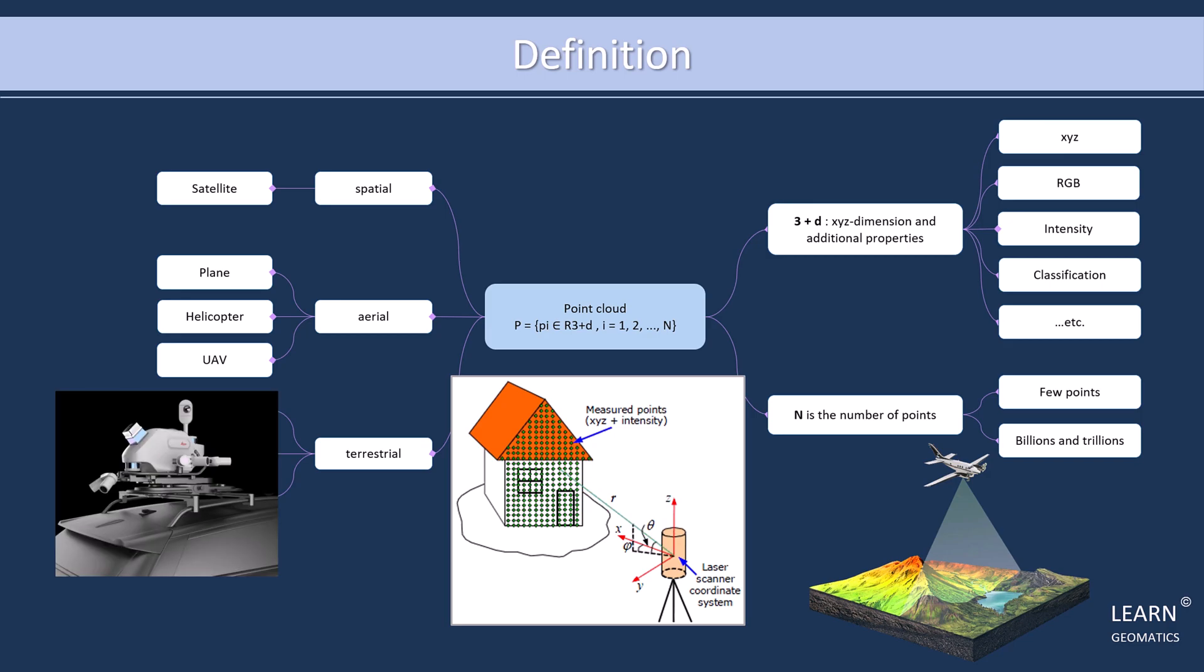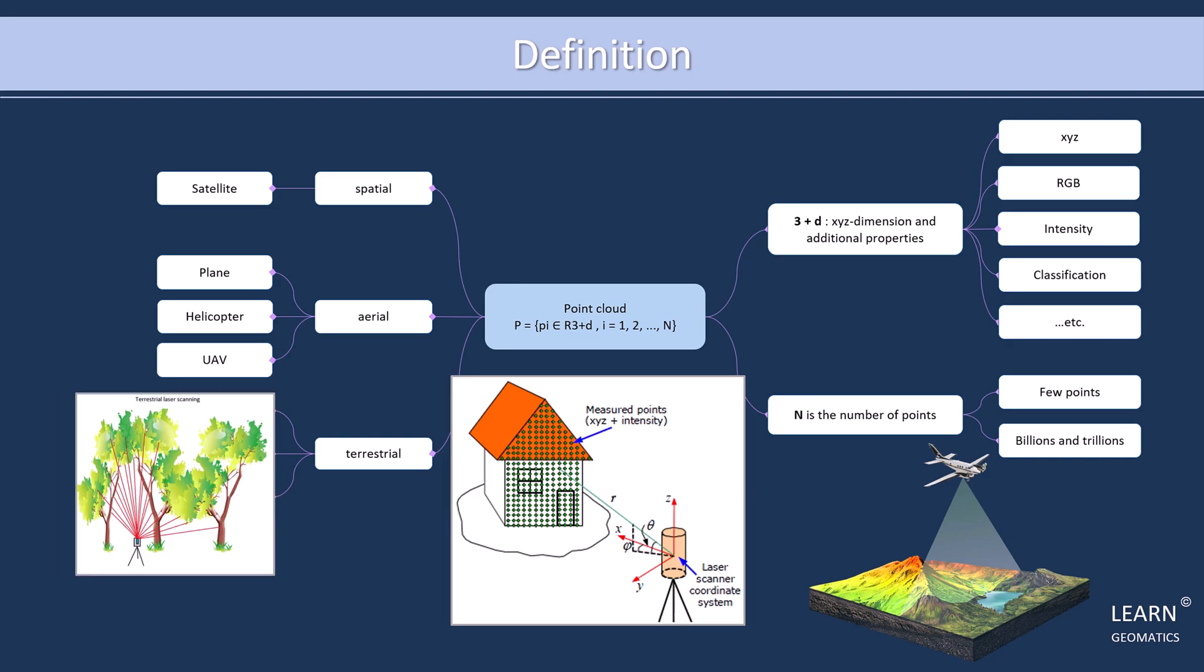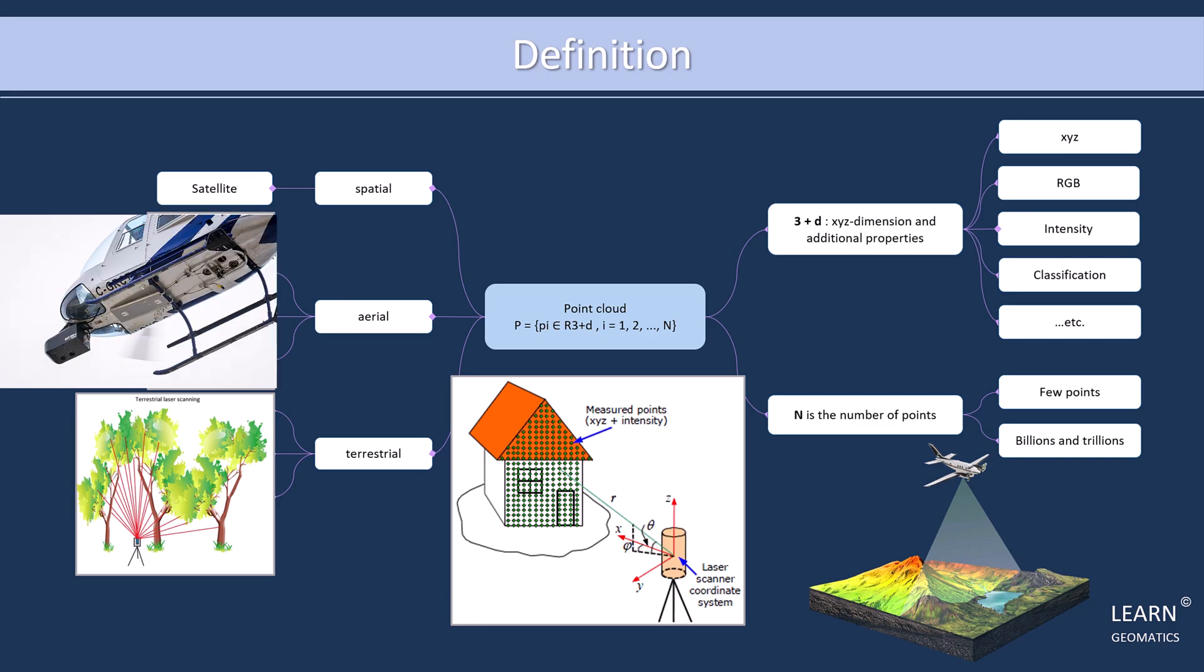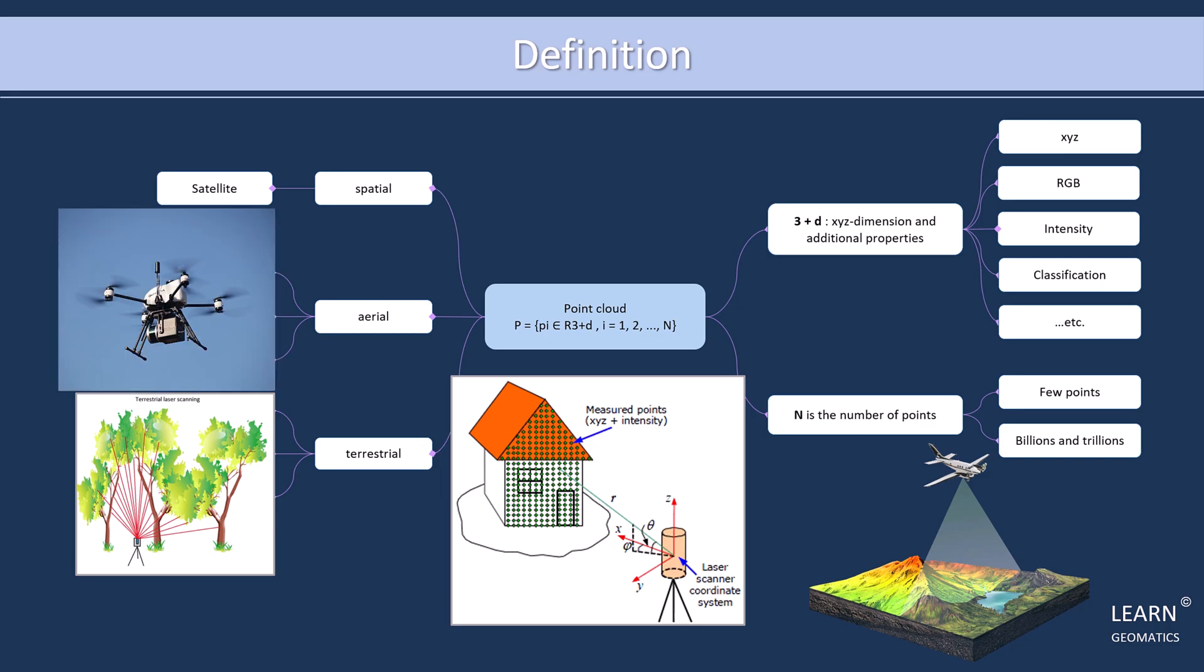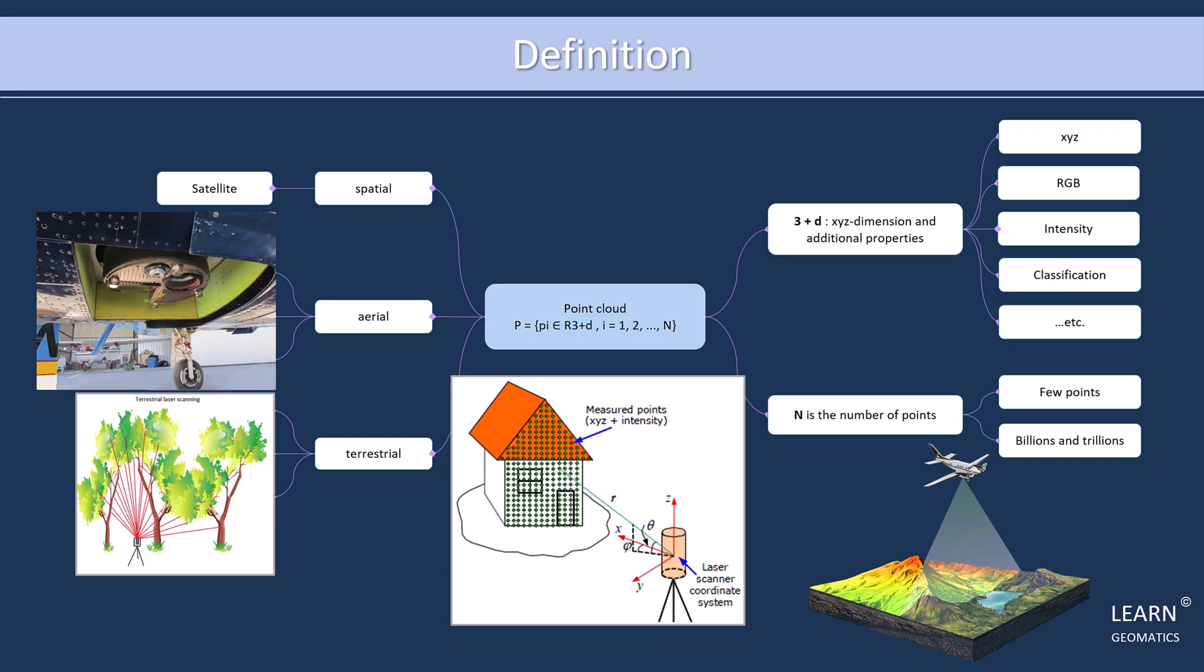Aerial sensors capture point clouds by flying over the scene in an airplane or helicopter. They use a combination of laser sensors and cameras to capture the scene from different angles. These sensors can cover large areas in a short amount of time, making them ideal for large-scale applications.